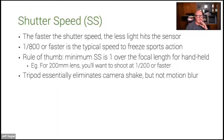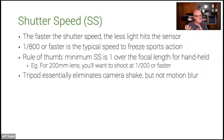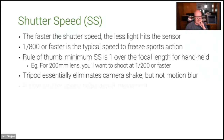Camera shake is me wobbling when trying to hold the camera. Motion blur is different — I could be perfectly still but someone's running across the frame. If you have a slow shutter speed and they're running across, you'll see blur of the person.